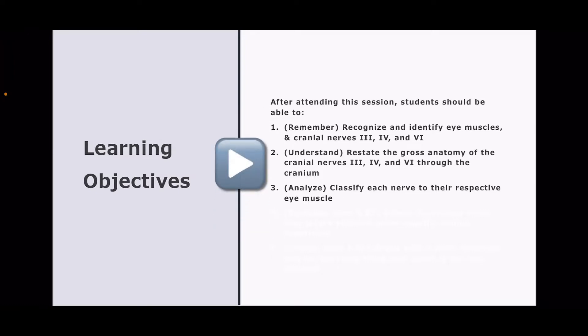Then we're going to restate the gross anatomy of the cranial nerves 3, 4, and 6 through the cranium and then we're going to classify each nerve.